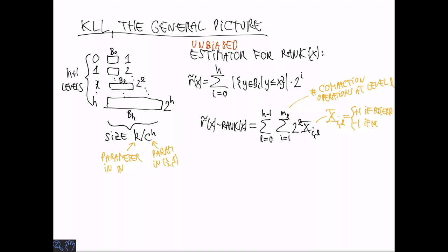So here we use ML to denote the number of compactions happening at level L. And the random variable XIL to denote the error or the sign of the error at the ith compaction at level L. So this could be plus 1 if there's a positive error of 2 to the L, or minus 1 if there's a negative error of minus 2 to the L. So the total error is exactly this sum.